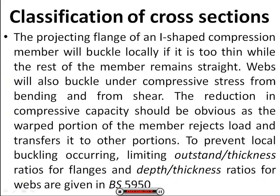Column cross sections are classified by how they behave under load. The projecting flange of an I-shaped compression member will buckle locally if it is too thin, while the rest of the member remains straight. Webs will also buckle under compressive stress from bending and shear. The reduction in compressive capacity should be obvious as the warped portion rejects load and transfers it to other portions. To prevent local buckling, limiting outstanding thickness ratios for flanges and depth-thickness ratios for webs are given in British Standard 5950.